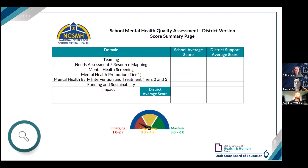The score summary page is at the end of this toolkit. At the end of each domain, there's a section that asks you to add up your score. After answering all the questions, you add up your average score and transfer those scores to this summary page for a comprehensive look at where you stand. The gauge at the bottom provides a visual to see whether you're emerging, progressing, or in mastery. You can use this summary page to target next steps and inform future efforts such as building capacity, planning, and implementation.